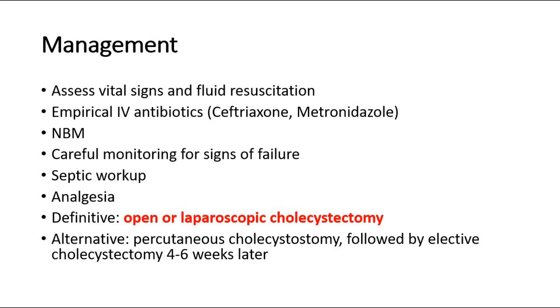Percutaneous cholecystostomy will help to drain the gallbladder and relieve the inflammation. Once the acute episode is over, after around 4 to 6 weeks, an elective cholecystectomy — removal of the gallbladder — can then be performed.